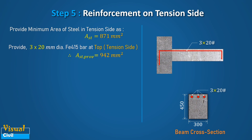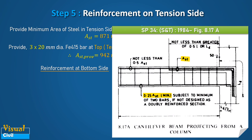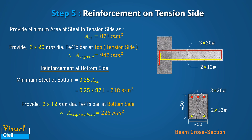Now, let us determine the reinforcement at the bottom side of the beam. As per SP34 1984 figure 8.17A for the cantilever beam projecting from a column, the minimum area of steel at the bottom should be 0.25 times AST, where AST is the area of steel calculated for the maximum bending moment at the support. Hence, the minimum steel at the bottom is 218 mm square. So, provide 2 number of 12 mm diameter bars at the bottom.